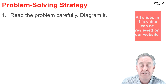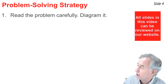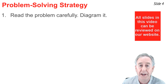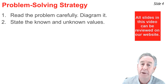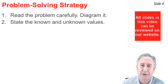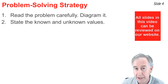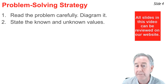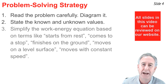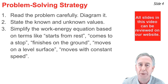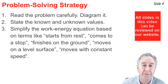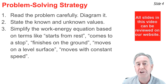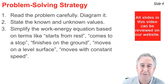Here is a problem-solving strategy. Step one: read the problem carefully, get a mental picture, and diagram it. Step two: look for numerical values — the knowns — write them down and relate them to symbols, for example H_i = 21.7 m, and identify the unknown, for example V_f = ?. Step three: simplify the work-energy equation. Look for clues like 'starts from rest,' 'comes to a stop,' 'moves across level ground,' or 'moves at constant speed' to cancel terms that are zero or equal on both sides.